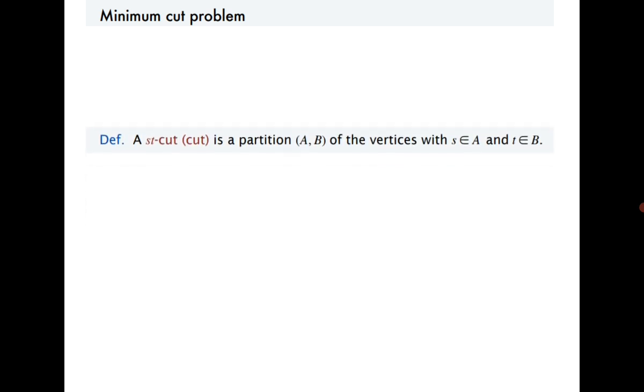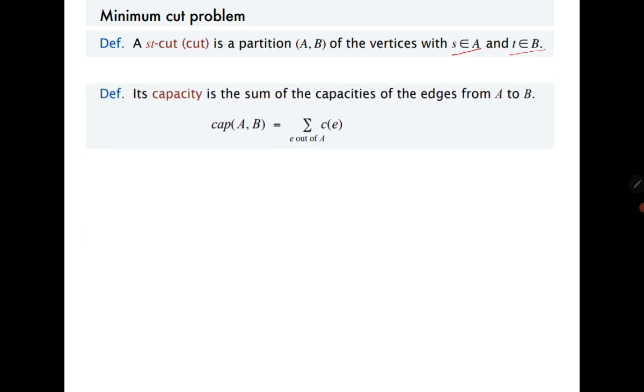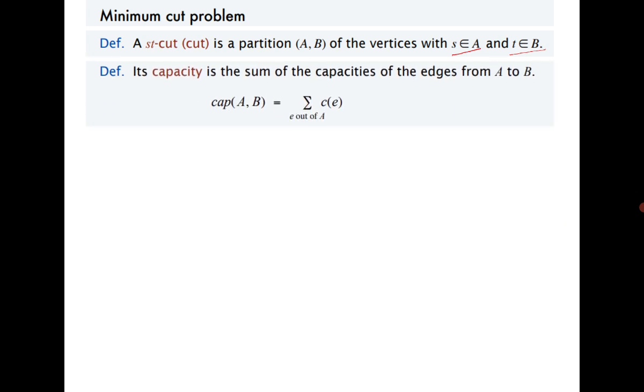The next concept is the minimum cut problem. There are two problems which work simultaneously: the maximum flow problem and the minimum cut problem. A cut, or S-T cut, is a partition of the vertices into two sets A and B, with the condition that S belongs to A and T belongs to B. The capacity of this cut is the sum of the capacities of the edges going out of A.